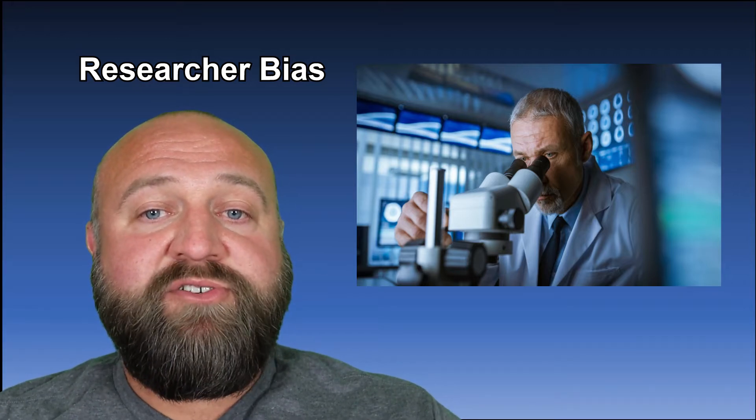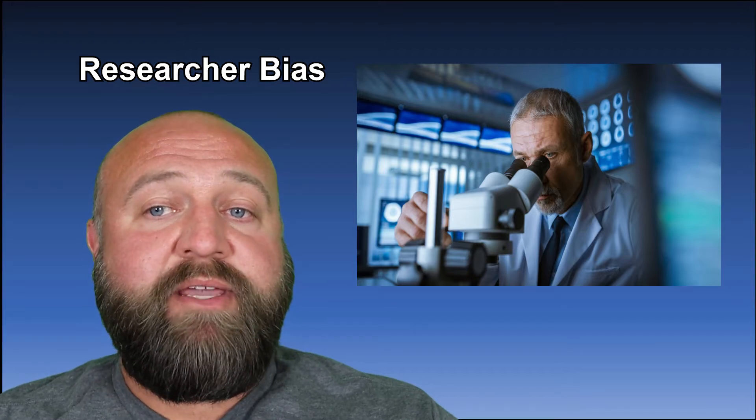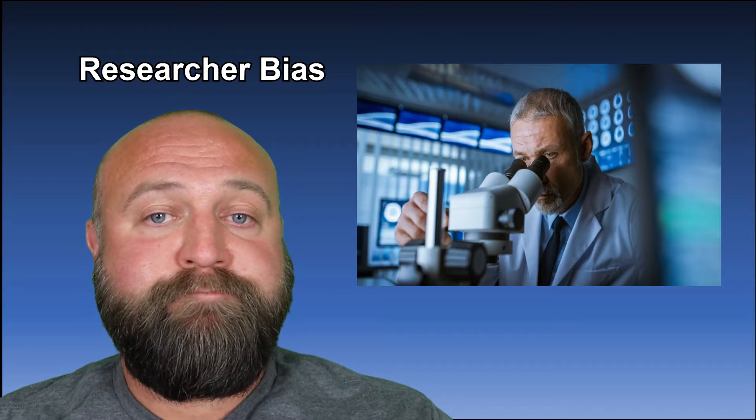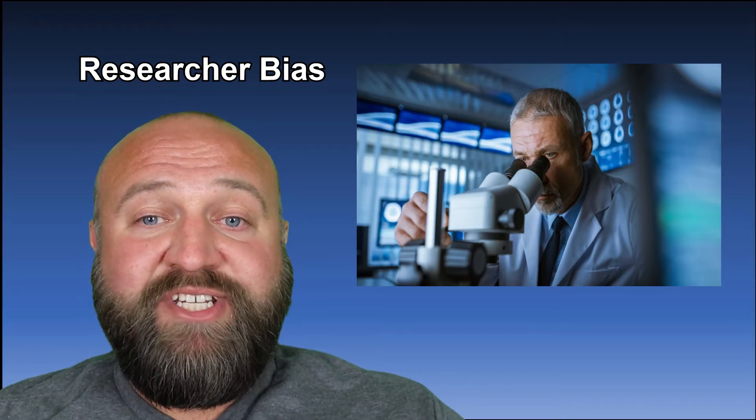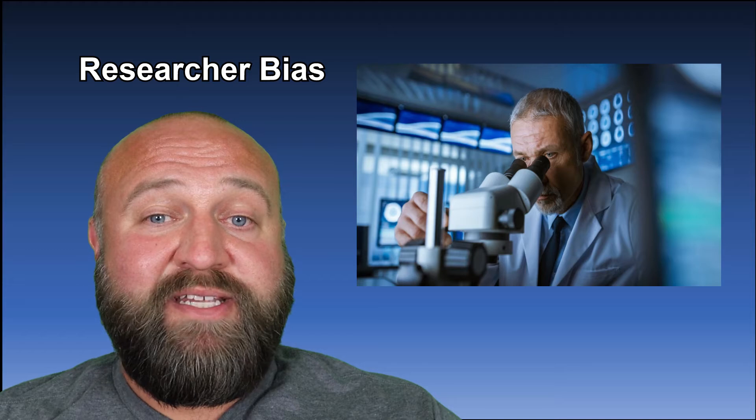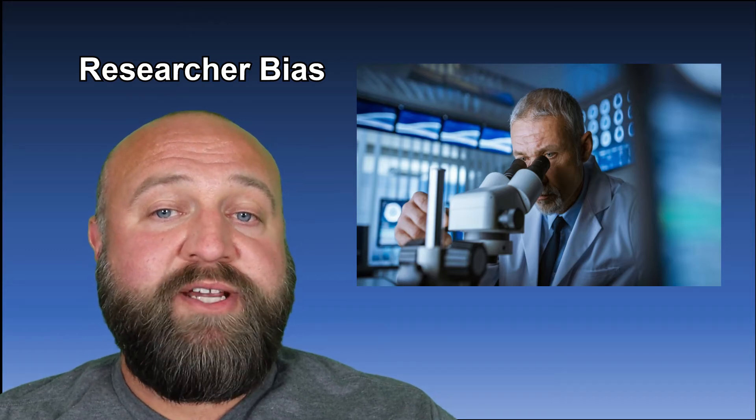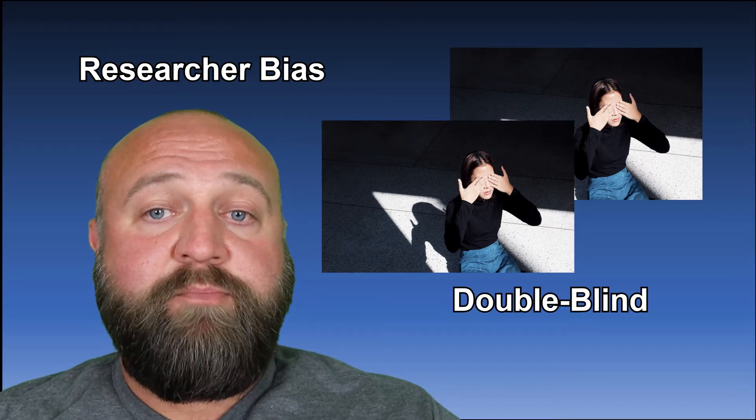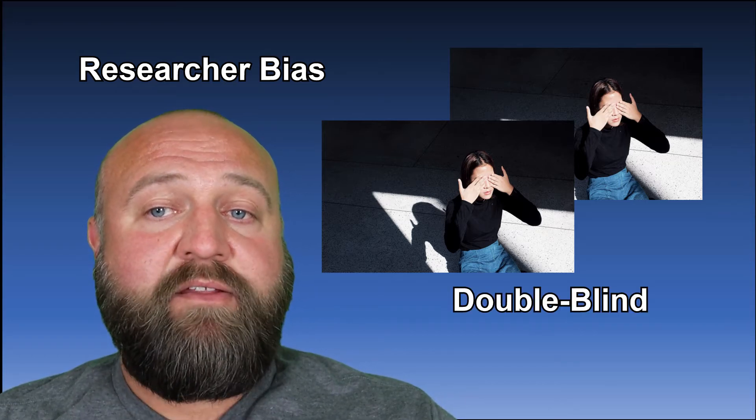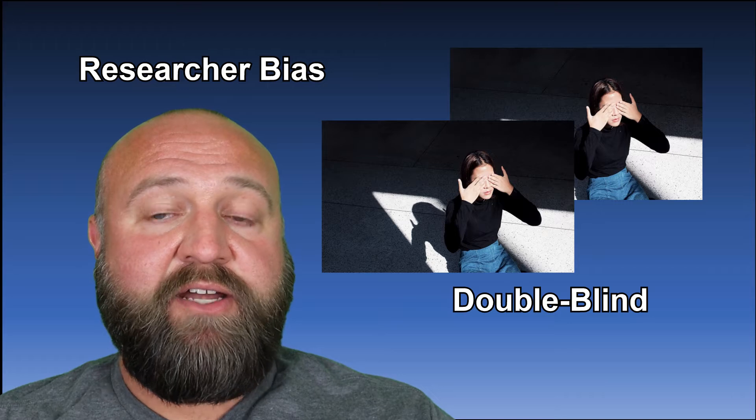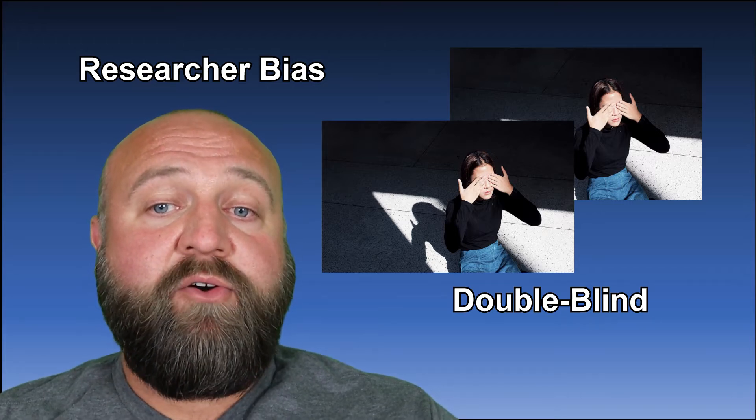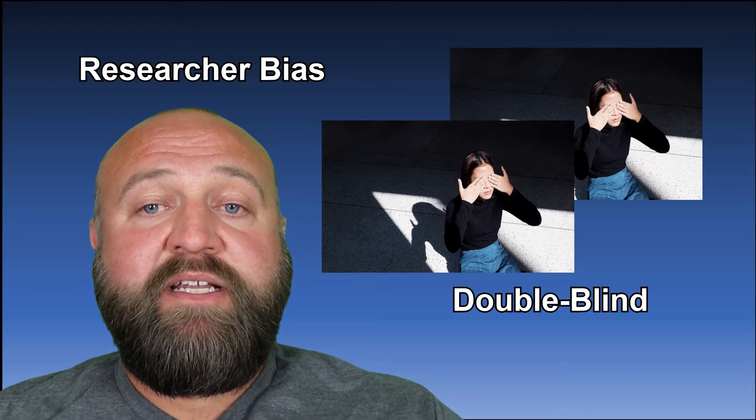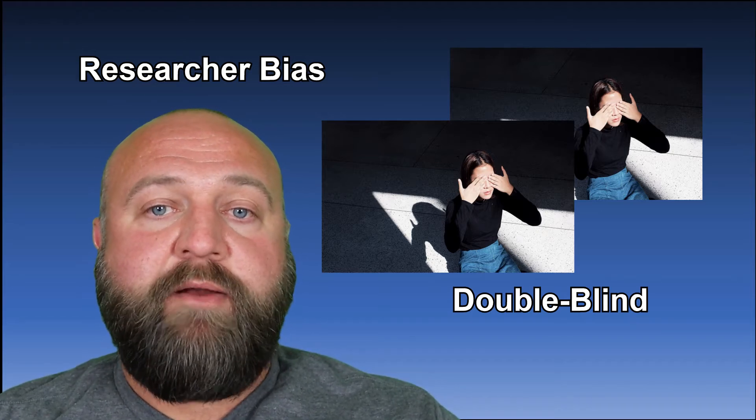It is where a researcher's thoughts and or actions can be influenced on a participant based on them being in a control group or an experimental group. Just like we get around participant bias with a single-blind study, we can get around researcher bias through what's called a double-blind study. In a double-blind study, both the participants and the researchers that have contact with the participants are unaware of which group the participants are actually in. Double-blind studies are really the gold standard for experiments.